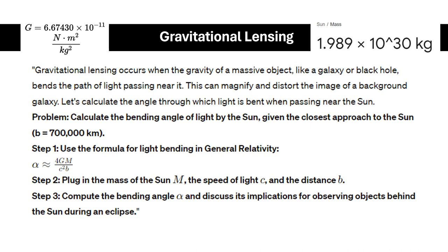For our sample problem here, let's calculate the angle through which light is bent when passing near the Sun. Most of the problems here involve massive objects like stars, especially our Sun. The problem reads: Calculate the bending of light by the Sun, given the closest approach to the Sun is about 700,000 kilometers.